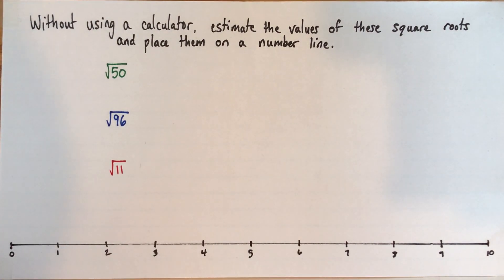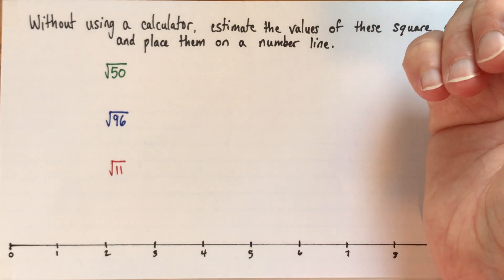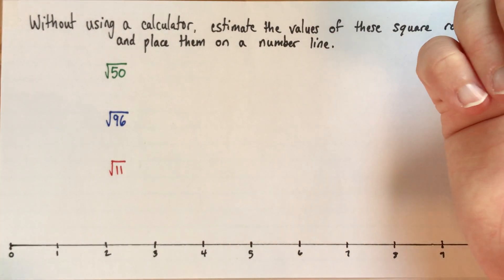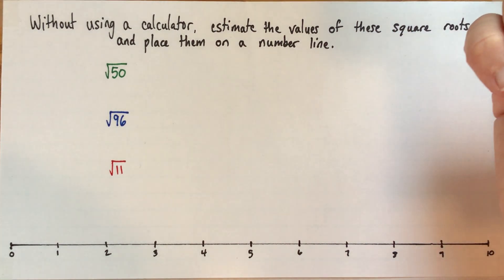So if you understand what square roots mean, some square roots are pretty easy to know what their values are. For example, if we have the square root of 16, if you remember that the square root is the number that you'd multiply by itself to get the 16, then you say, okay, the square root of 16 is 4, because 4 times 4 is 16.